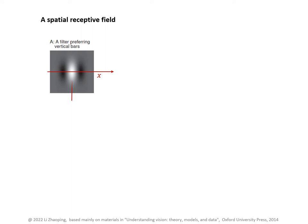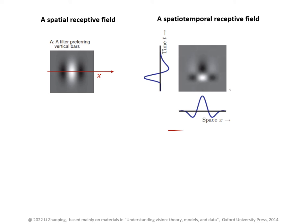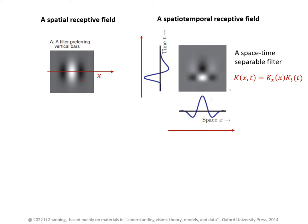Starting from a spatial receptive field preferring a vertical white bar in the x-y space, let's study a neuron's spatiotemporal tuning by removing the y dimension to focus on x only, and adding a time dimension to show a spatiotemporal receptive field with space x and time t. This spatiotemporal filter is a space-time separable filter because it is roughly a product between a spatial filter from the receptive field and a temporal impulse response function.